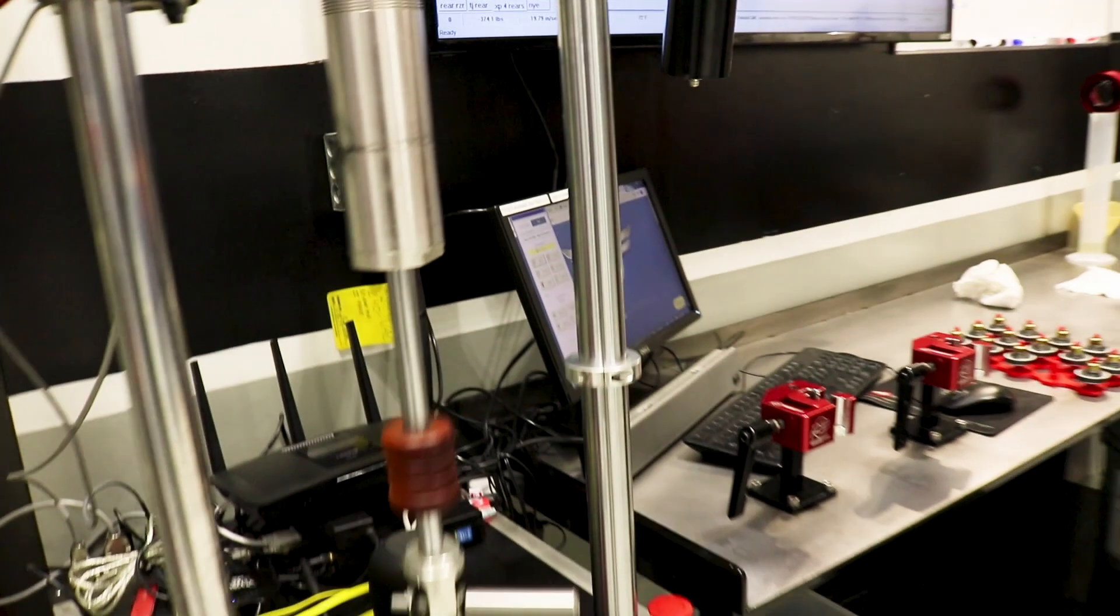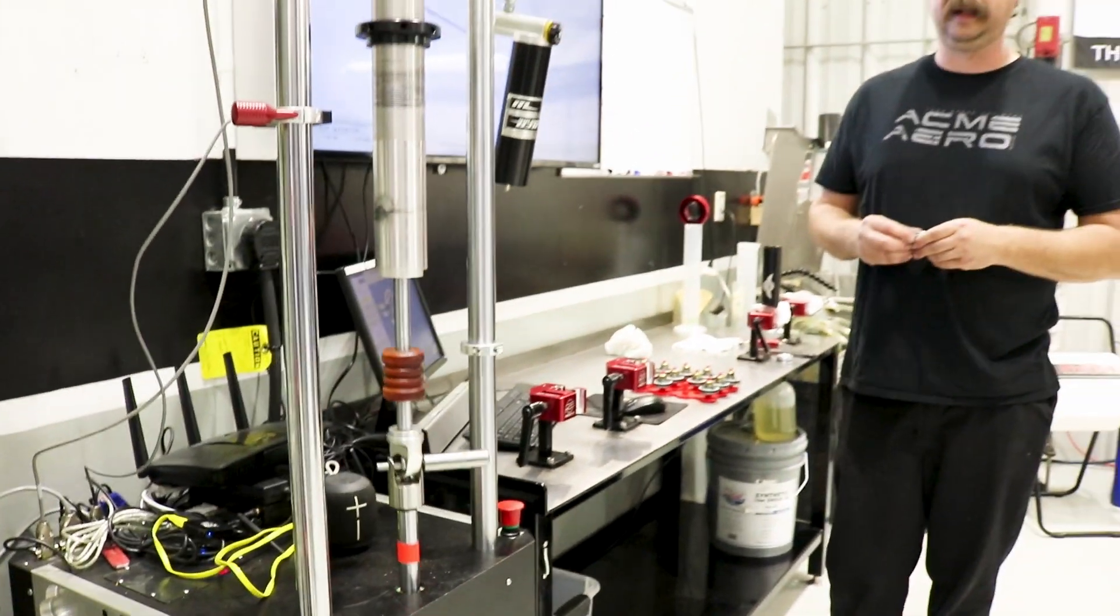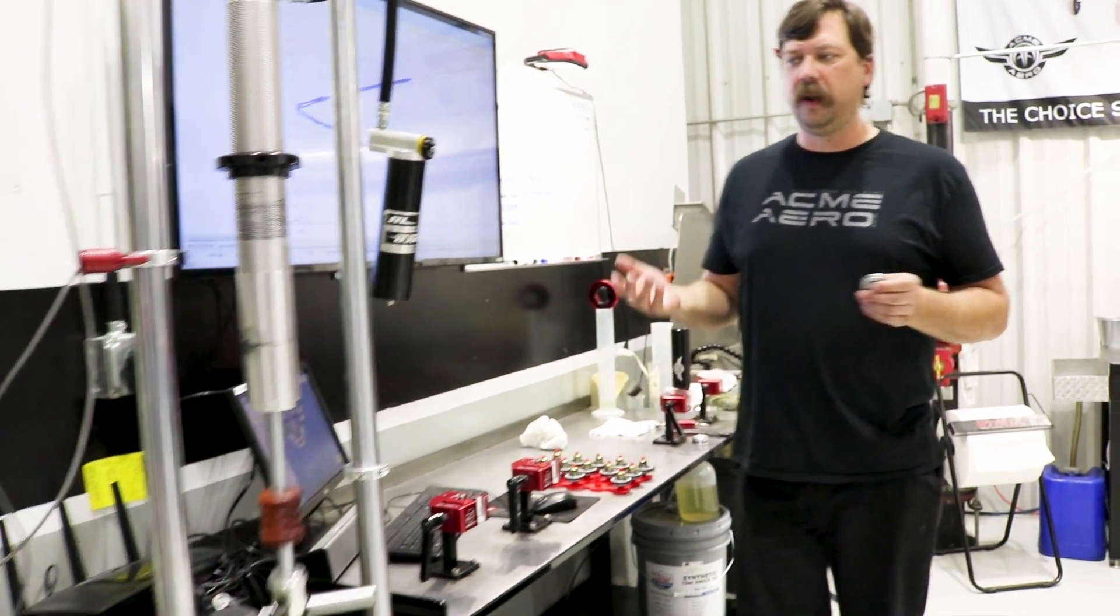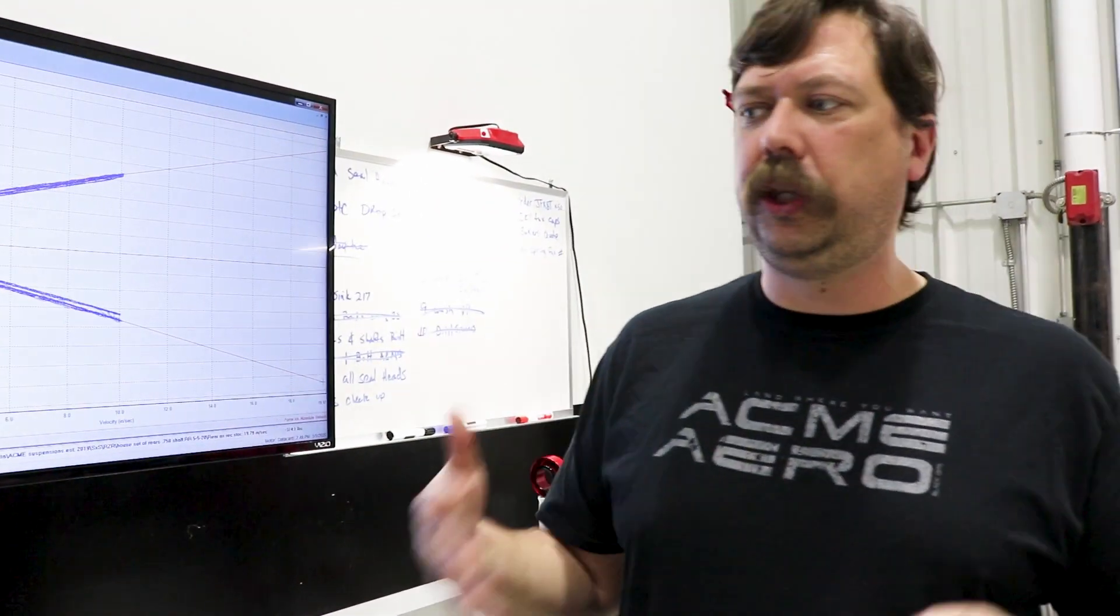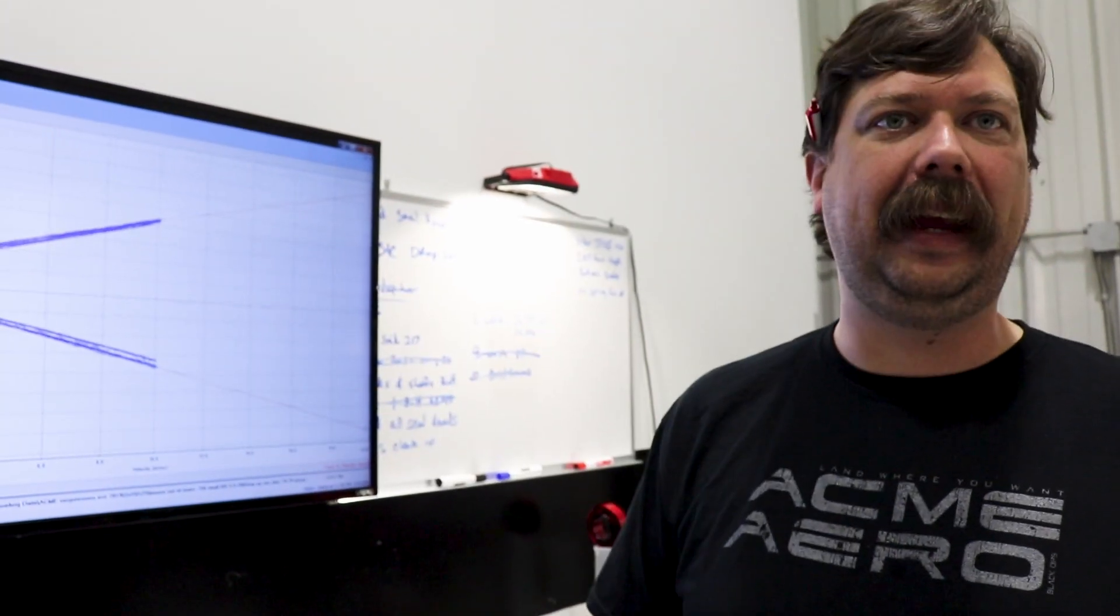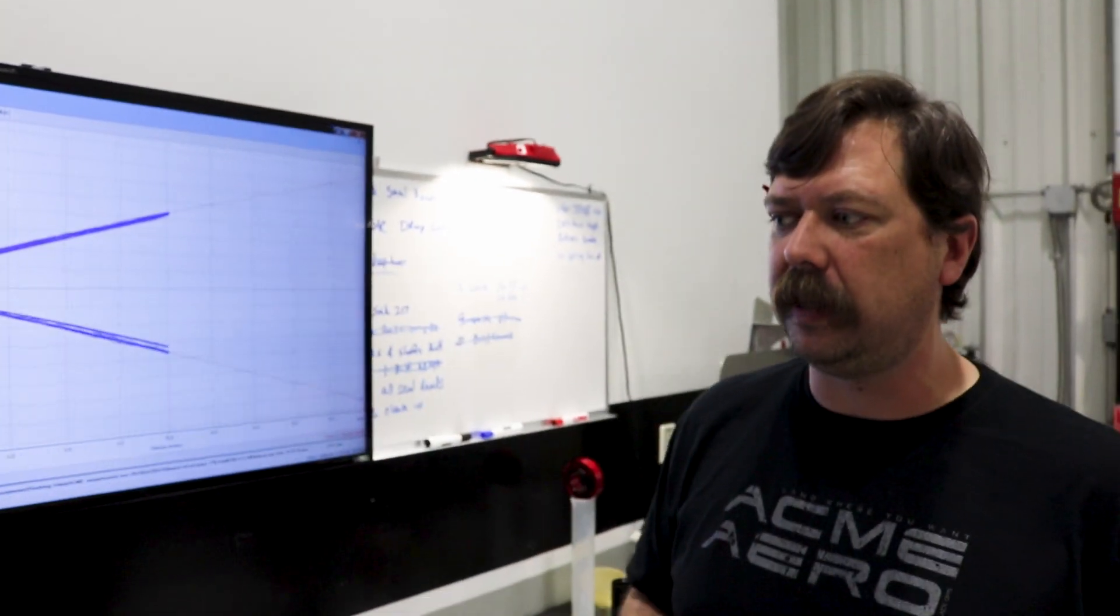Now we've got a shaft velocity of 10 inches a second. At that point, we're opening the shim stack. This is really more of a—10 inches a second is a good normal landing speed, you know, when you guys aren't augering this thing in. This is normal working velocities.